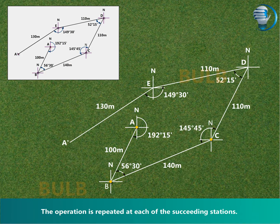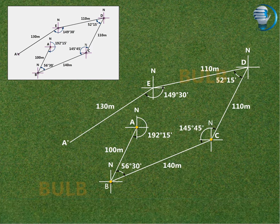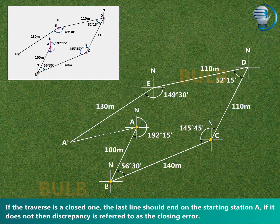If the traverse is a closed one, the last line should end on the starting station A. If it does not, then the discrepancy is referred to as the closing error.